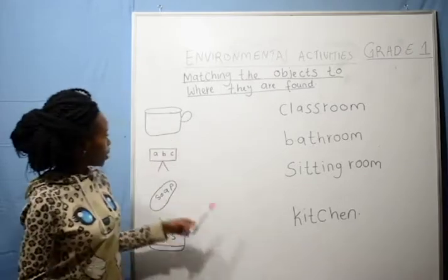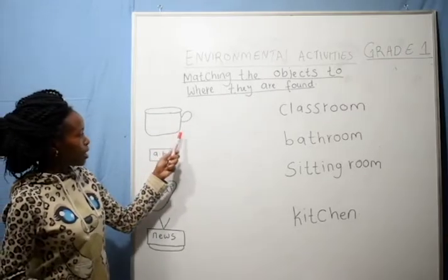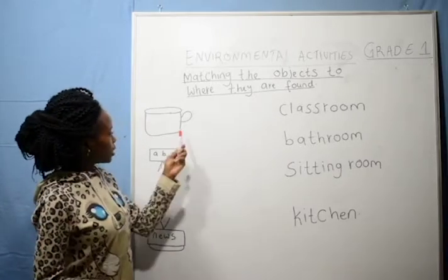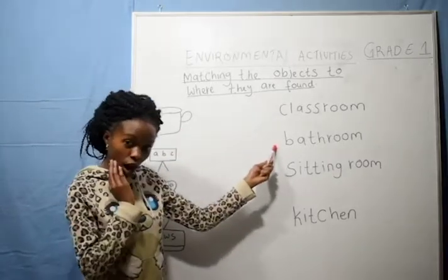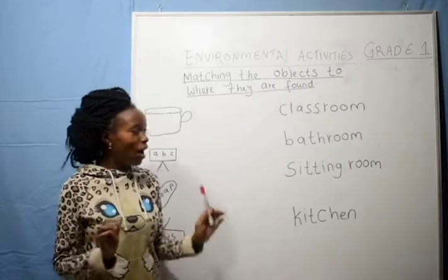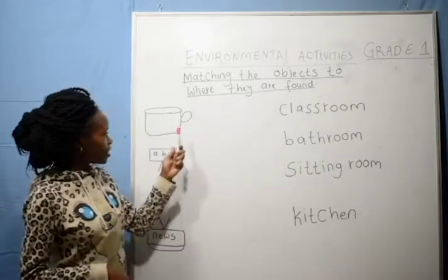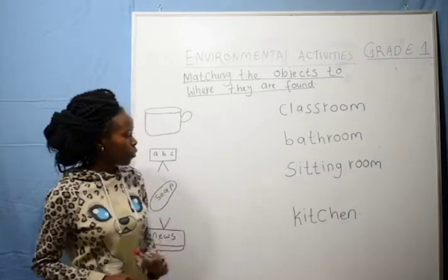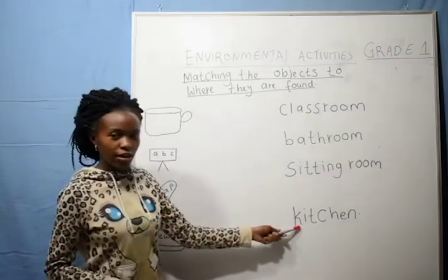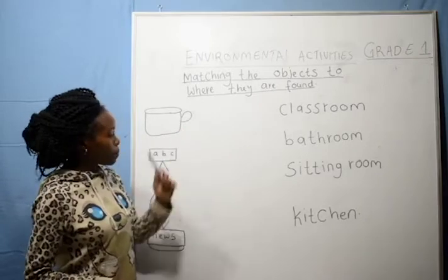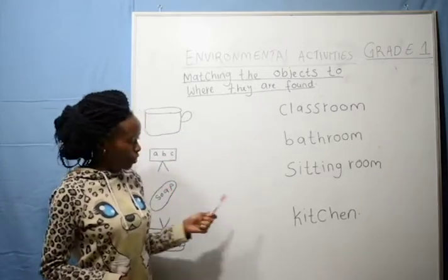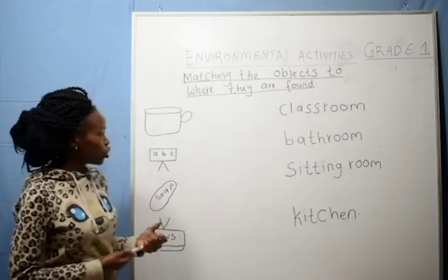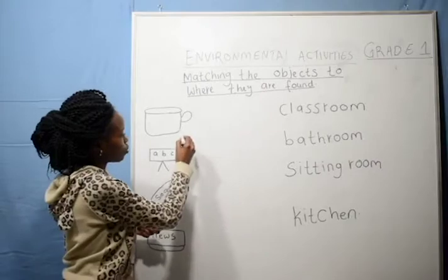For example, we have seen this one is a cup. Is cup found in the classroom? No, it is not. Is it found in the bathroom? No, it is not found in the bathroom. Is it found in the kitchen? Very good. The cup is mostly found in the kitchen. So you match cup and then kitchen.